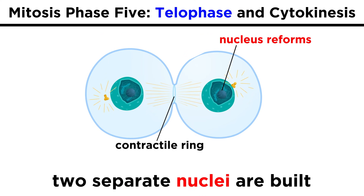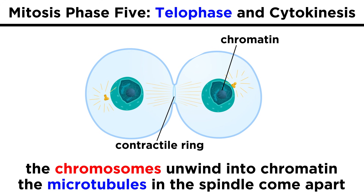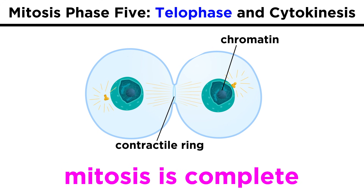Then in the telophase, two new nuclei form, rebuilt from the fragments of the original nucleus that came apart in the prometaphase. The chromosomes loosen up a little, the microtubules finish coming apart, and mitosis is complete, with two genetically identical nuclei.